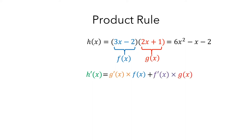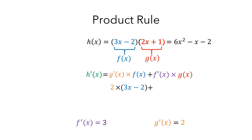For example, in this case, we know that the derivative of f is 3, and the derivative of g is 2. So to use the product rule, we would multiply the derivative of g by f, and then add the derivative of f multiplied by g. When you combine these terms, you get 12x minus 1, which matches what we'd get if we'd used the power rule with h.